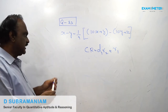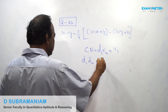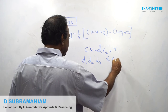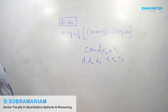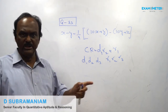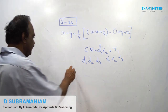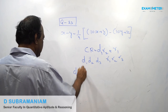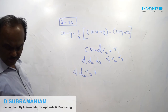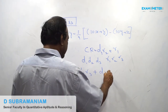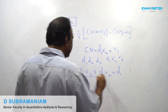For three divisors, CR = D1 × D2 × R3 + D1 × R2 + R1. For this problem: divided by 8 and 11, so D1 = 8 and D2 = 11. Remainders are R1 = 3 and R2 = 7. Apply the formula: CR = D1 × R2 + R1.